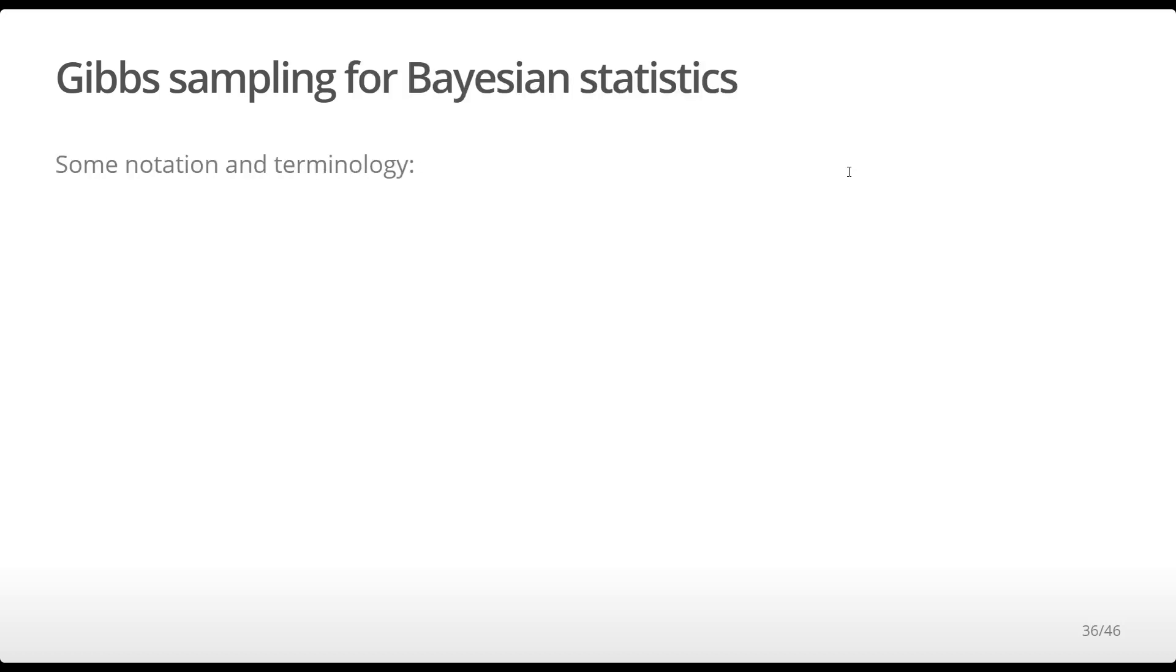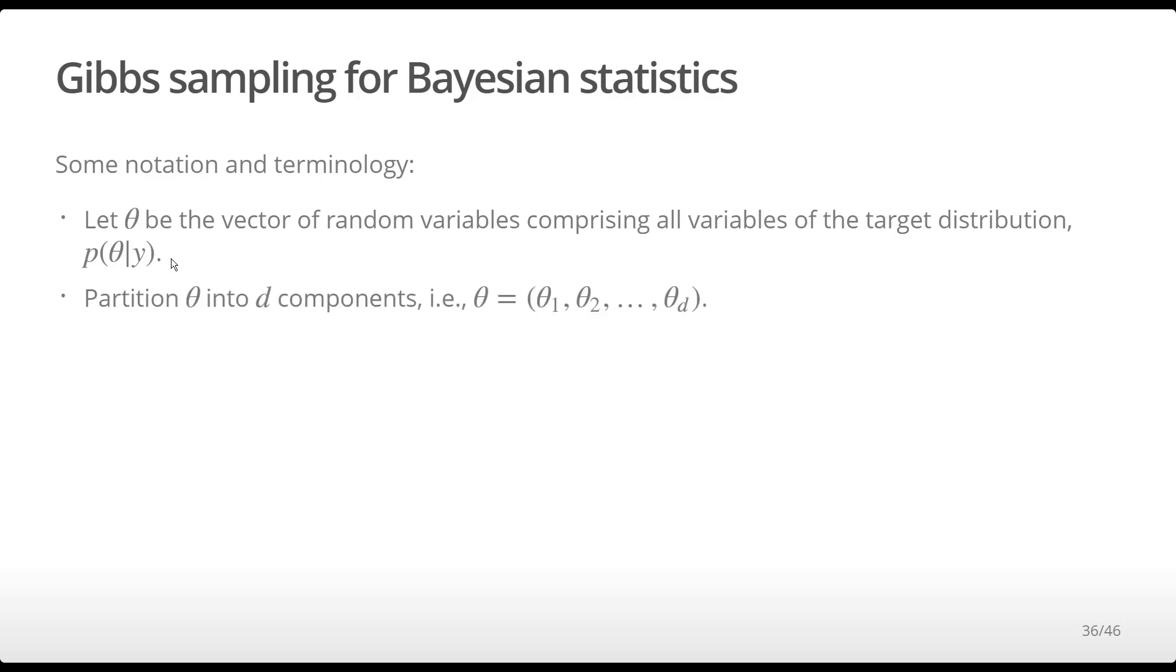We're going to discuss the Gibbs sampler in the context of Bayesian statistics. In that case, our target distribution is the posterior distribution, p of theta given y, and our vector of random variables are the parameters of the posterior distribution. We partition the parameter vector into d components.